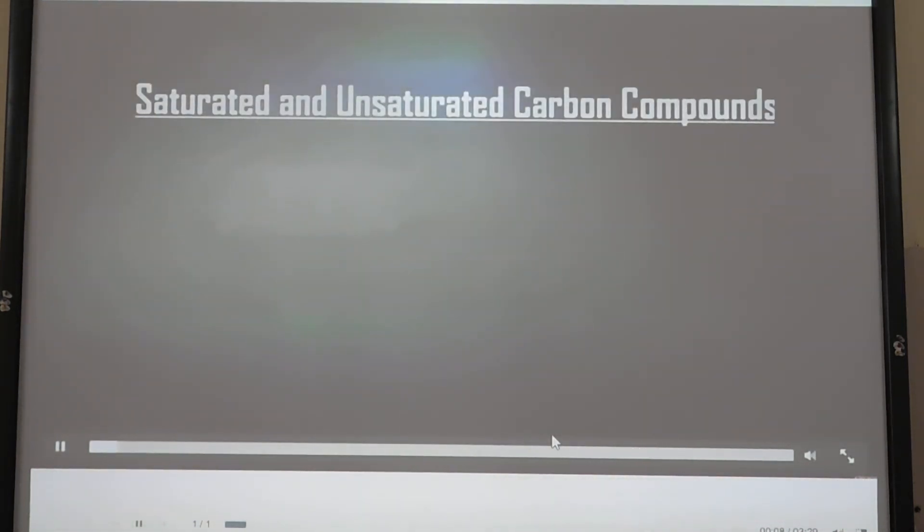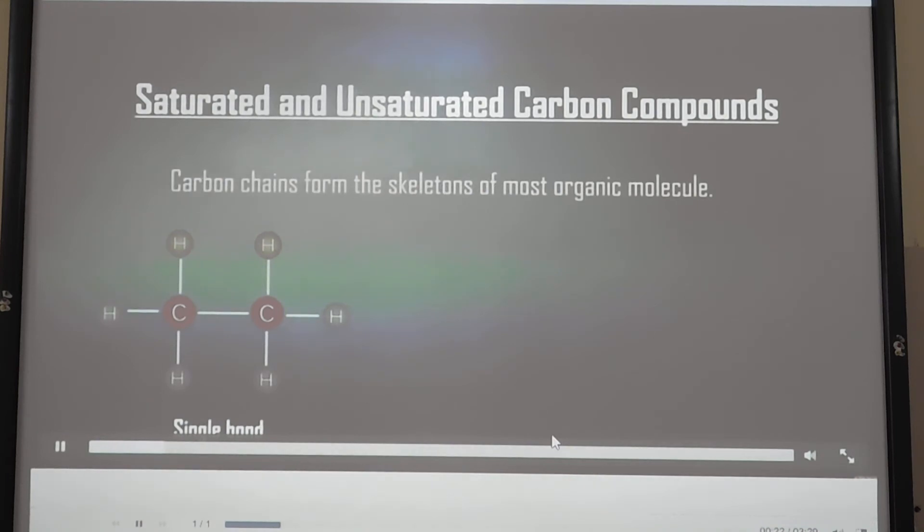Saturated and unsaturated compounds: Carbon bonds created by covalent bonding form the skeleton of most organic molecules. The skeleton may vary in having straight and branched chains or arranged in the form of rings. The carbon skeleton may also include single, double and triple bonds.